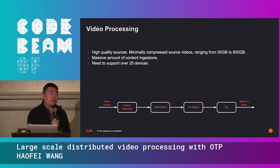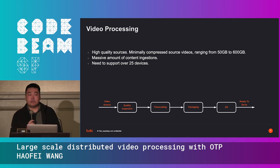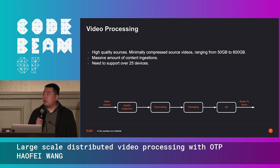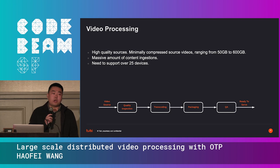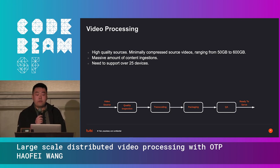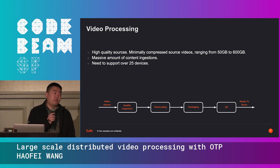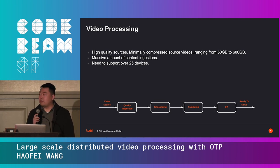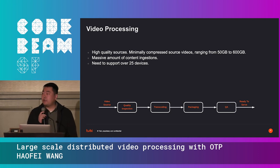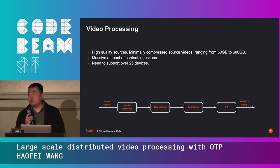From the video processing front, there are a lot of challenges. The number one challenge is that we often receive very high-quality sources from our partners and studios. Sometimes it's lossless, sometimes minimally compressed. A single file can range from 50 gigabytes to 600 gigabytes, and it may come in different video formats, different containers, and different video codecs.